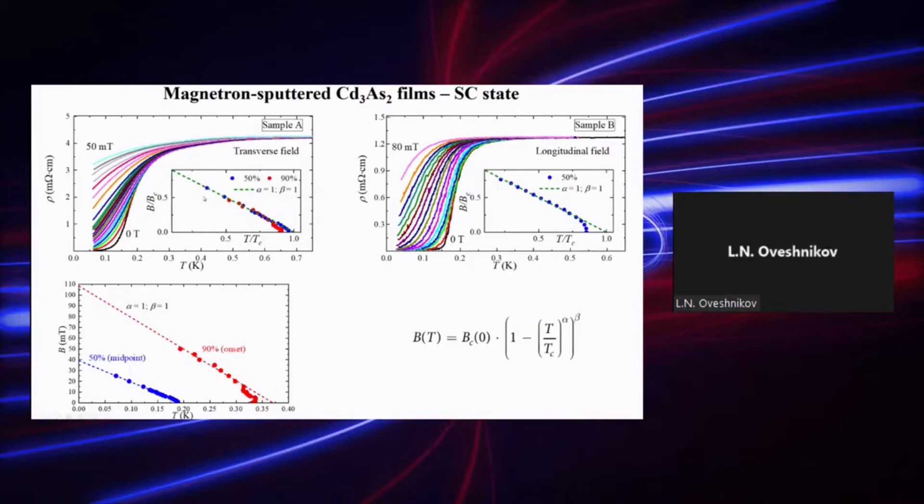However, if we normalize these values, they basically have the same character. As a convenient approximation, we chose a simple linear function, which describes well this diagram in the intermediate temperature range.